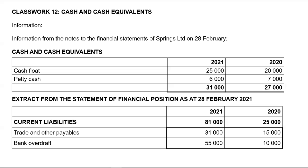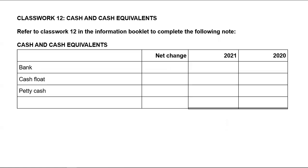We are required to prepare the cash and cash equivalents note for the cash flow statement. Bank overdraft for last year was negative 10,000. Why is it negative 10,000? It is because last year we had a bank overdraft, and bank overdraft is a negative bank balance.